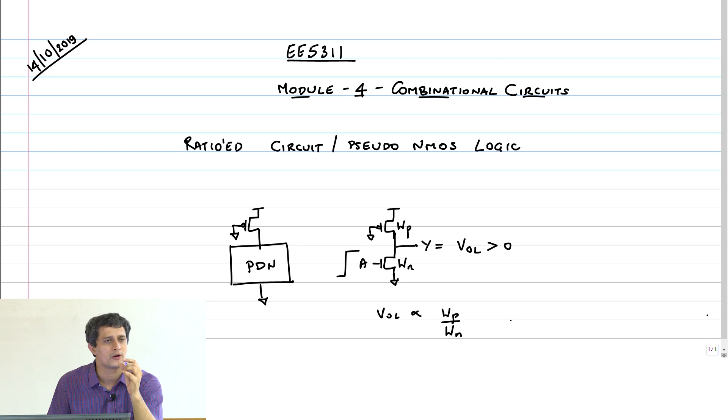If you make the PMOS transistor stronger, it's going to pull the output high with more current and take the output closer to VDD. So you have to keep this ratio appropriate so that the output logic VOL is low enough.